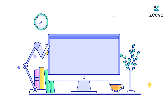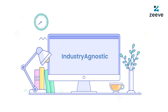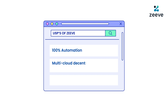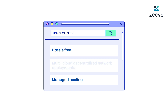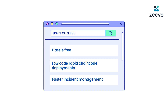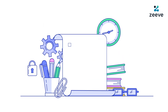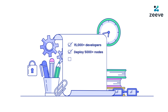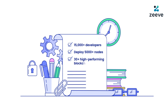Zeeve Web3 Infrastructure Platform is industry agnostic. Our USPs are 100% automation, multi-cloud, decentralized network deployments, managed hosting, and proactive monitoring that delivers hassle-free, low-code, rapid chain-code deployments with faster incident management. We currently work with 15,000-plus developers, deploy 5,000-plus nodes, and provide access to 30-plus high-performing blockchains.